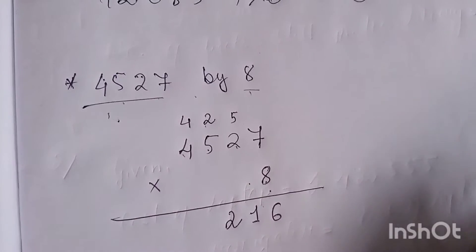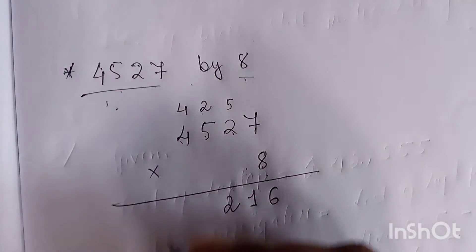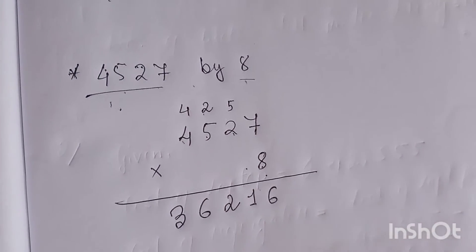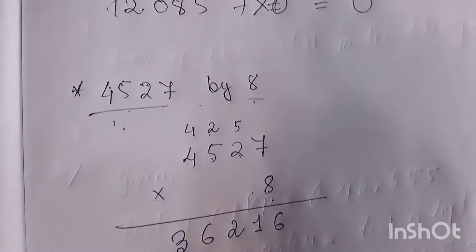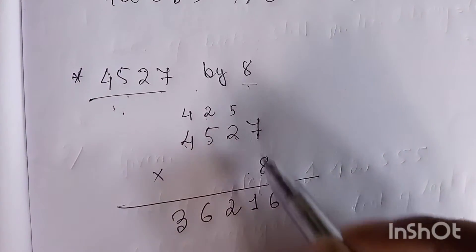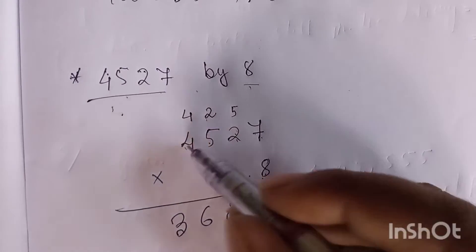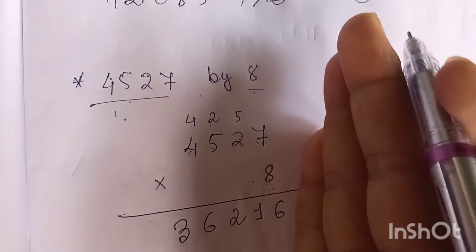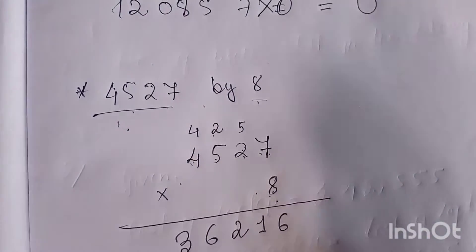Eight fours are thirty-two, plus four carried, thirty-six. This is the answer. Multiplication of a big number with a single digit is very easy — simply multiply each digit in the number by eight from right to left.